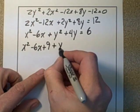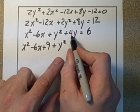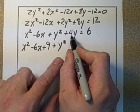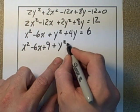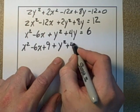Plus y squared. Okay, half of positive 4 is 2. 2 squared is 4. So it's plus 4y plus 4.